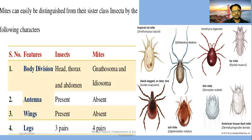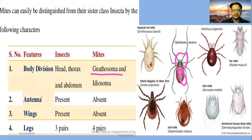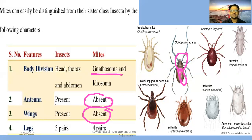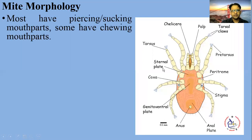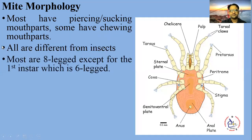Mites can be distinguished from their sister class Insecta by several characteristics. In mites, the head and thorax are fused together as one body region. The antennae are absent and wings are also absent, so they cannot fly. Insects have three pairs of legs, while mites have four pairs of legs — all arachnids possess four pairs of legs. Most mites have piercing or sucking mouthparts. The first instar has six legs; the rest of the life stages have eight legs.